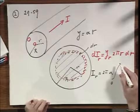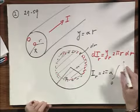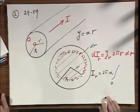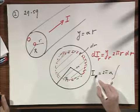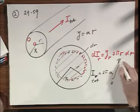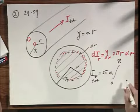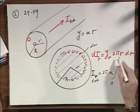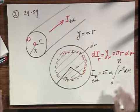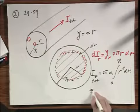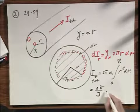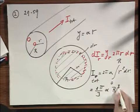Let me first do I total, which is this total value. So that will be then from zero to R, 2π alpha, and then you get r squared dr. And that tells you then that this equals 2π/3 times alpha times R cubed.